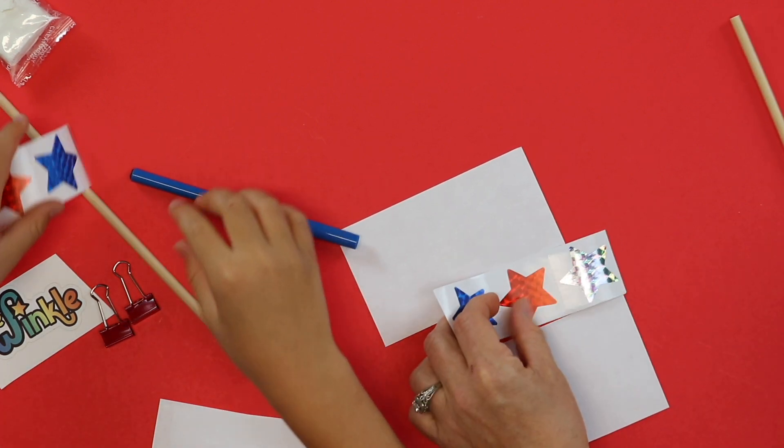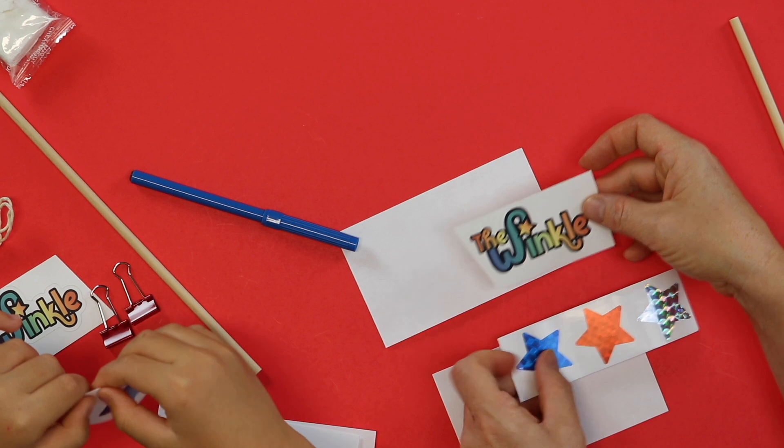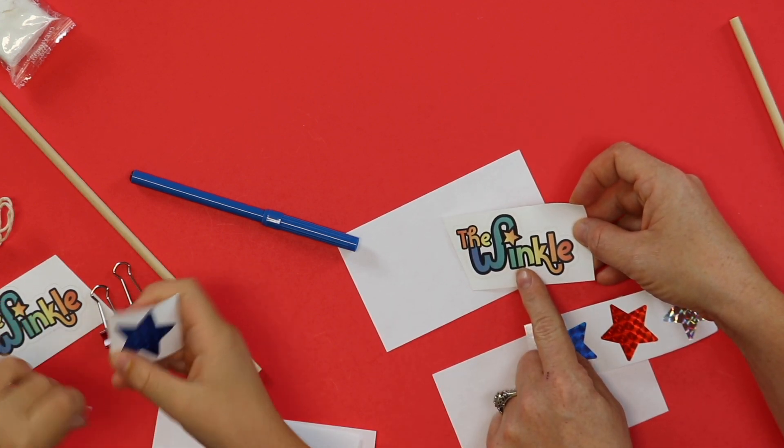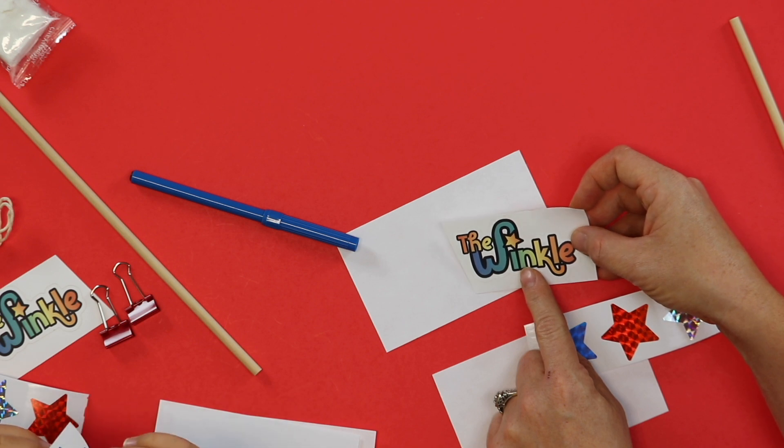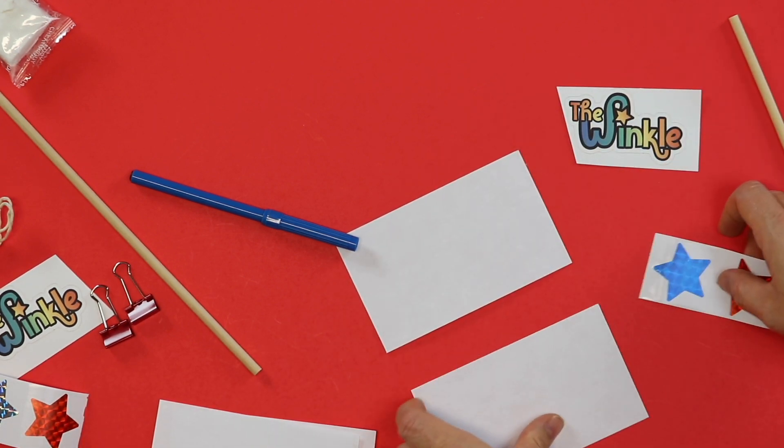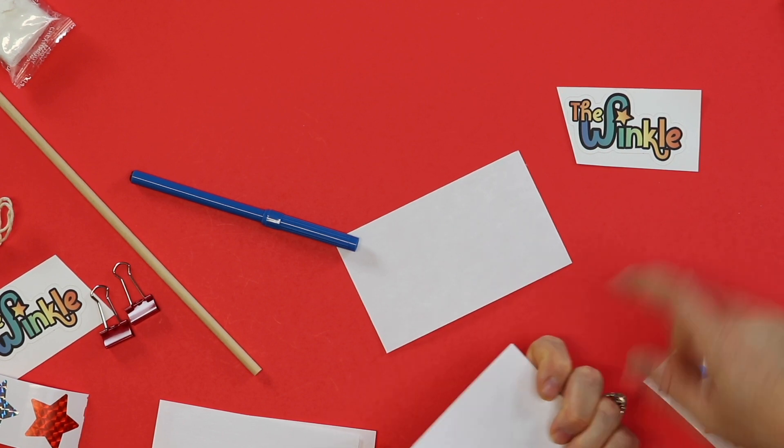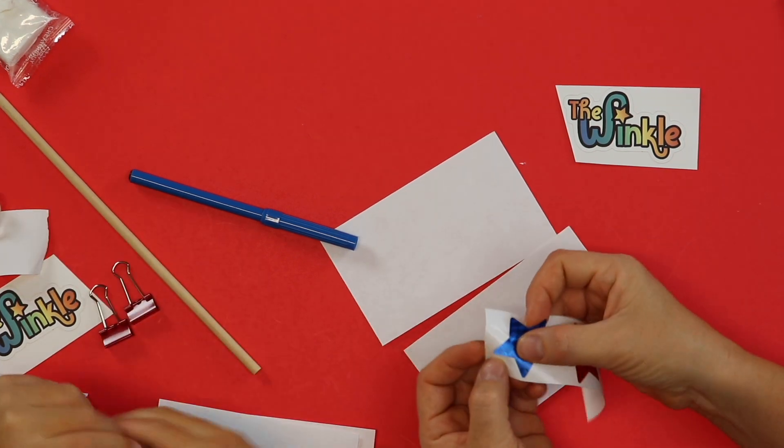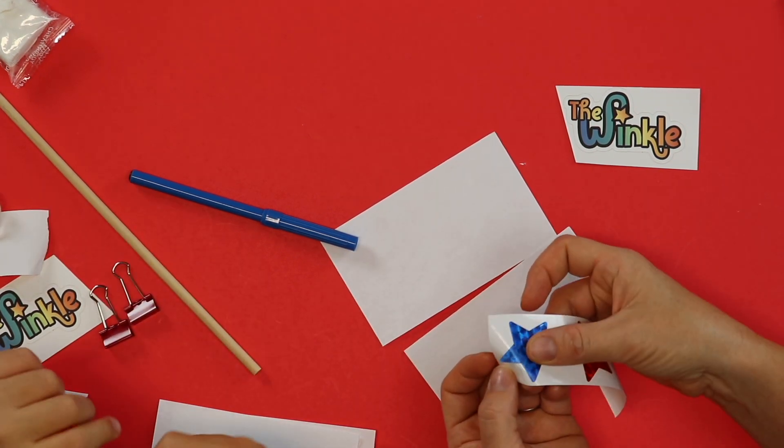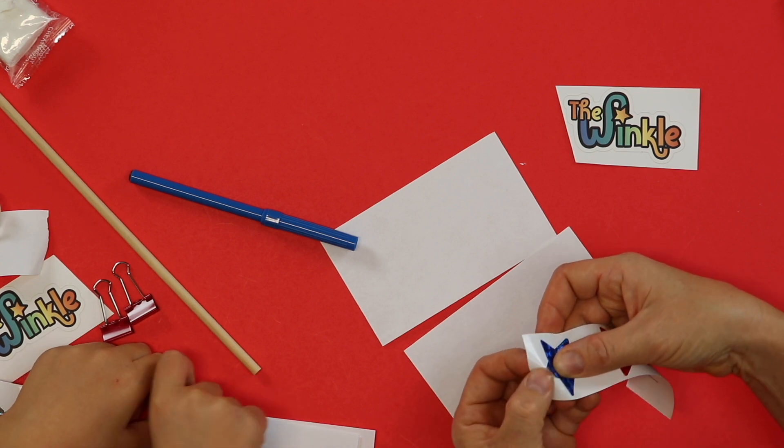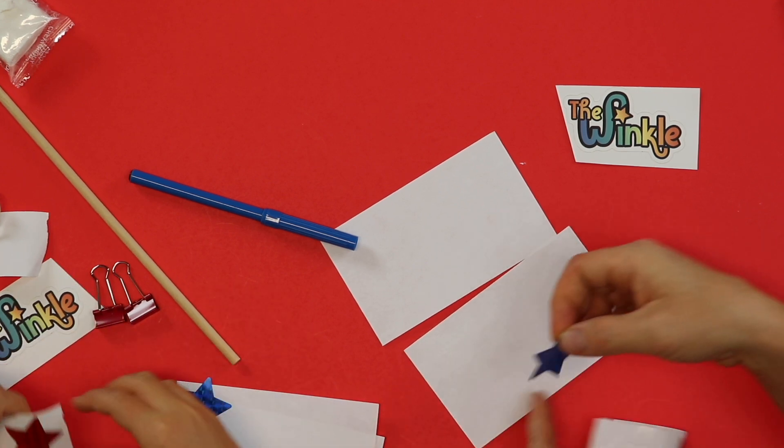And you can design your flag to be however you want. I gave you stars and a Winkle sticker. Now this Winkle sticker also could go on a water bottle or your laptop or whatever you have at home that you want to put a sticker on. Or you could stick it onto your flag. There's also, remember there's two sides of this flag. So if you want to decorate one side and then decorate the other side differently, you can do that too. So these star stickers can be kind of tricky to get off the paper, but basically you're going to bend your paper back and put your fingernail under there, and then you'll be able to pull up the sticker.